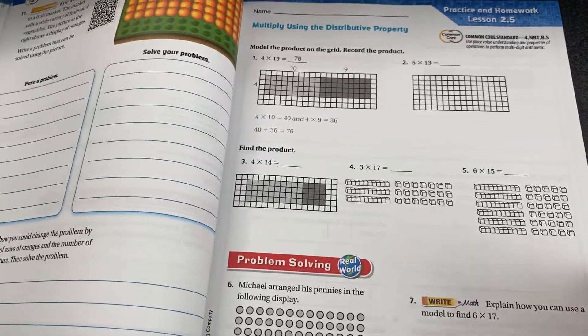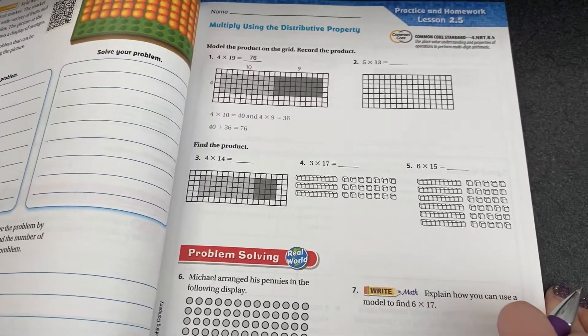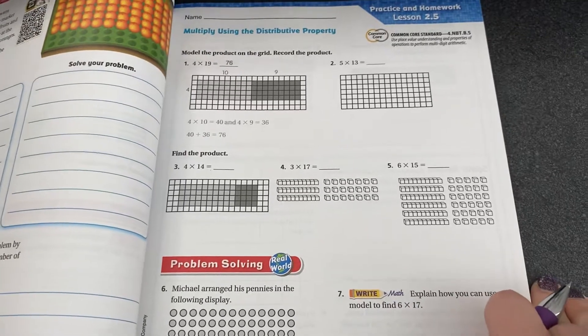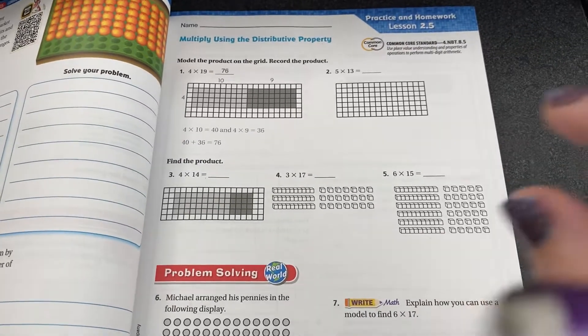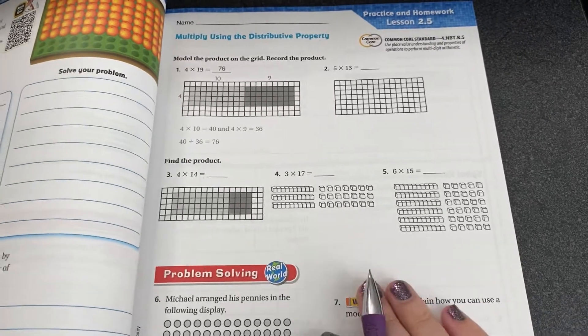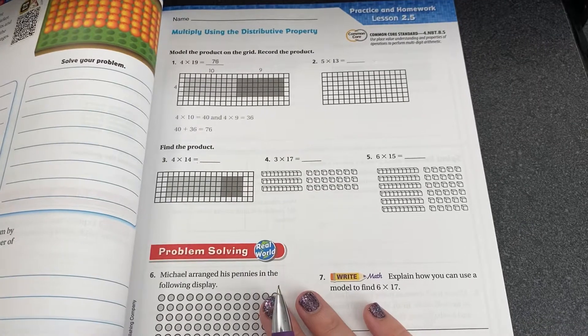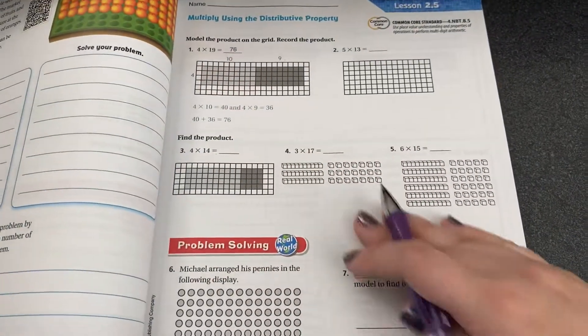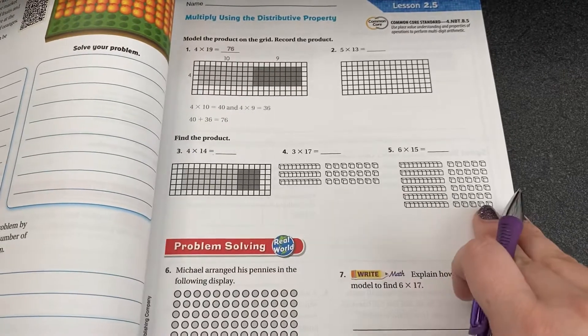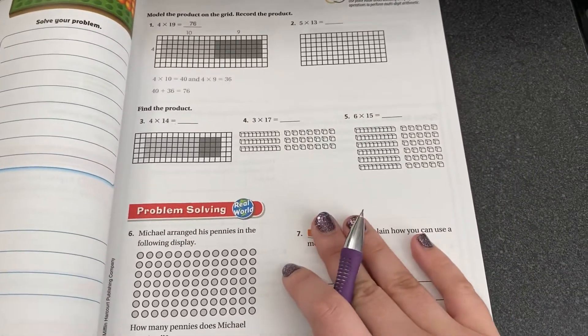But we're gonna use expanded form to help us with multiplication. Sometimes it's really challenging to multiply big numbers by another number. So if we use expanded form, that kind of helps us make that challenge into bite-sized pieces to make it easier to tackle. We're gonna start building area models for our multiplication problems.